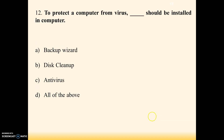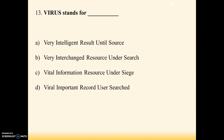Next question: to protect a computer from virus, what should be installed? Option A: backup wizard, option B: disk cleanup, option C: antivirus, option D: all of the above. The answer is option C — antivirus. We have to install antivirus in our computer to protect it from viruses and different malicious software.